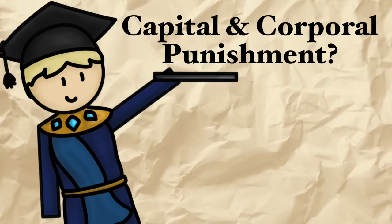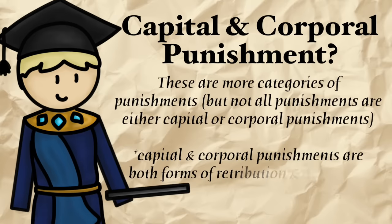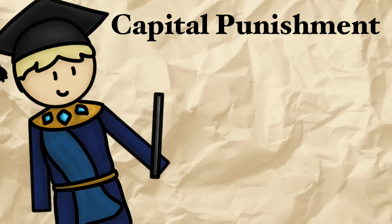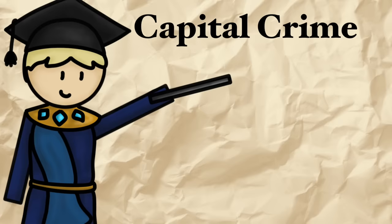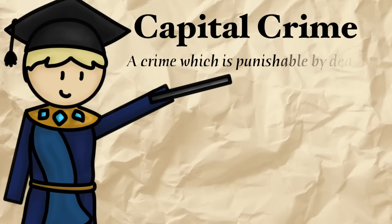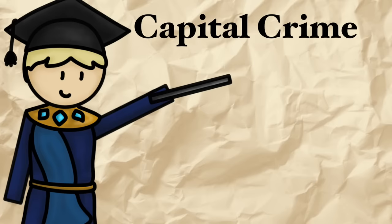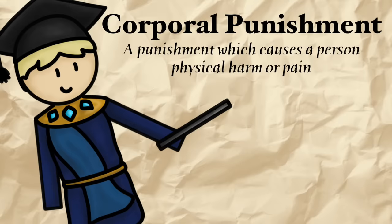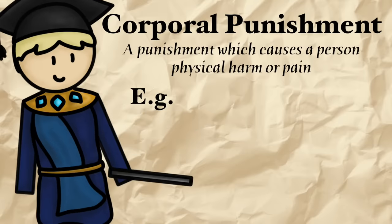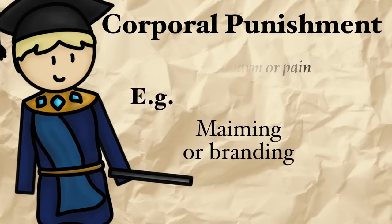What are capital and corporal punishment? These are two types of punishment. Capital punishment is punishment by death, and a capital crime is a crime which is punishable by death. Corporal punishment, however, is punishment which causes a person physical harm or pain, such as maiming or branding.